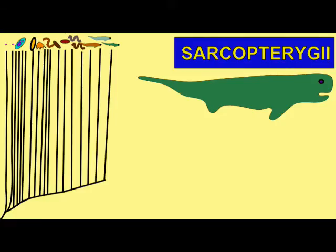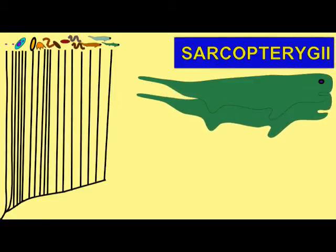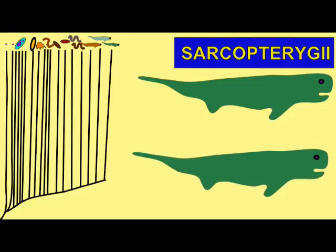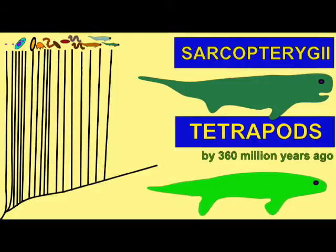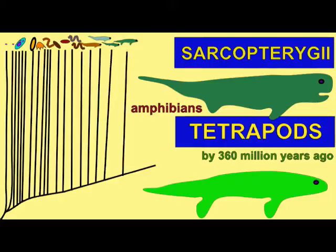Do you consider yourself an amphibian? Since the first tetrapods were amphibians, all modern tetrapods would be their descendants. But if we do not consider reptiles, birds, mammals, and ourselves as amphibians, then the term amphibian includes some of the descendants of a common ancestor, but not all, and therefore represents a paraphyletic group.